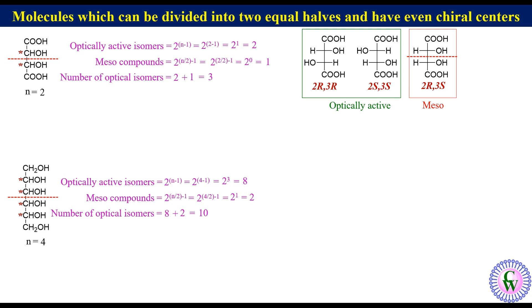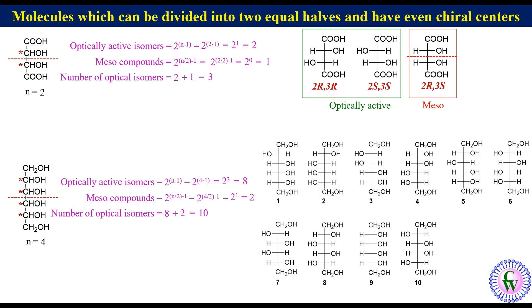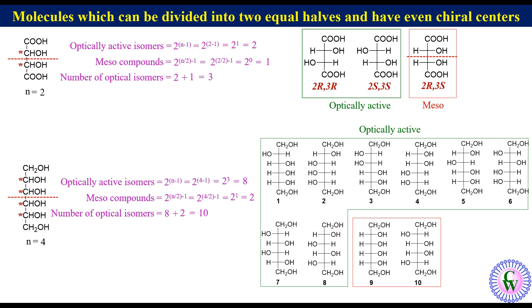These are the 10 optical isomers, out of which 8 are optically active while 2 are meso compounds due to the presence of a plane of symmetry. Isomer 5, which is the reduced form of D-glucose, is also known as sorbitol.